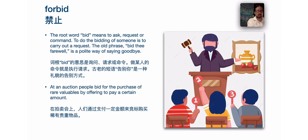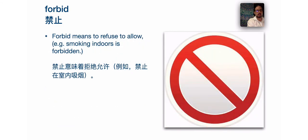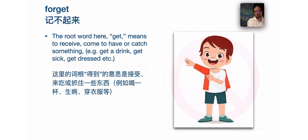Looking at our first word using the prefix for: forbid. The root word bid means to ask, request, or command. To do the bidding of someone is to carry out a request. The old phrase 'bid thee farewell' is a polite way of saying goodbye. At an auction, people bid for the purchase of rare valuables by offering to pay a certain amount. Forbid means to refuse to allow — a kind of negative request. Prohibit.